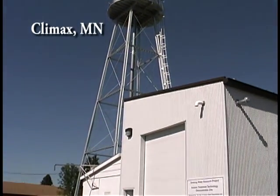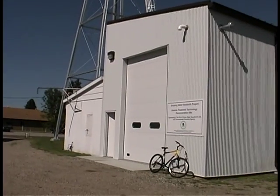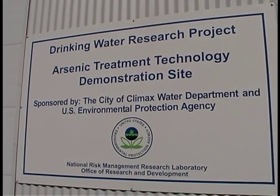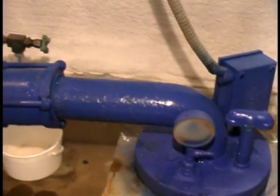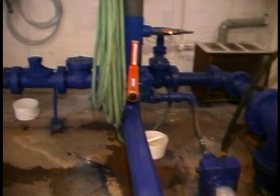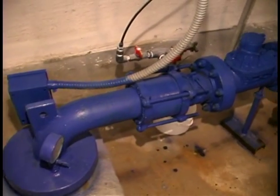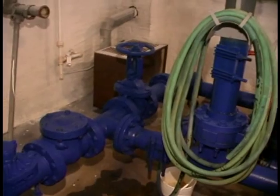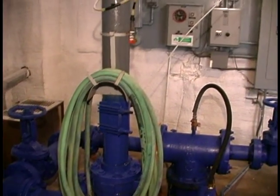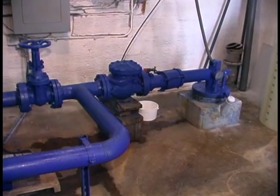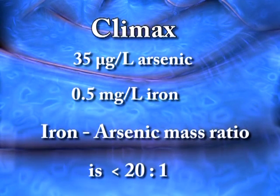Climax, Minnesota is also using coagulation filtration to remove arsenic and is participating in the EPA Arsenic Demonstration Project Round 1. Climax has two 140-foot deep wells with flow capacities of 140 and 160 gallons per minute, though only one well is operated at a time, alternating monthly. The wells have about 35 micrograms per liter of arsenic — primarily arsenic 3 — and 0.5 milligrams per liter iron, representing an iron-to-arsenic ratio of less than 20 to 1, which is below the ratio needed for efficient arsenic removal.